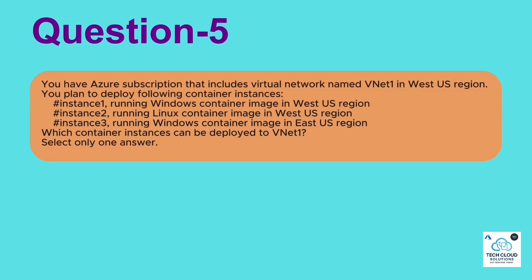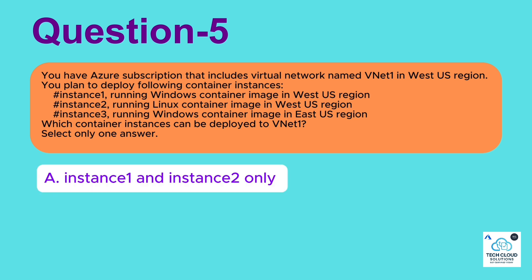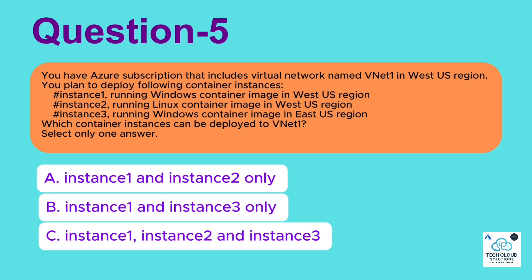Question 5: You have an Azure subscription that includes a virtual network named VNet1 in the West US region. You plan to deploy the following container instances. Instance 1: running Windows container image in West US region. Instance 2: running Linux container image in West US region. Instance 3: running Windows container image in East US region. Which container instances can be deployed to VNet1? Select only one answer. A. Instance 1 and Instance 2 only. B. Instance 1 and Instance 3 only. C. Instance 1, Instance 2 and Instance 3. D. Instance 1 only. E. Instance 2 only.